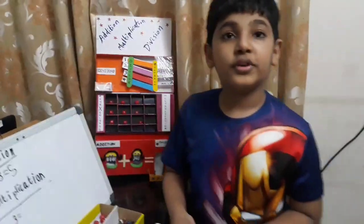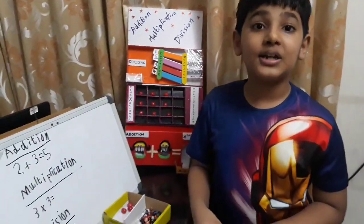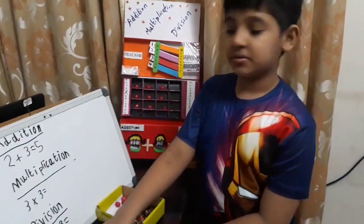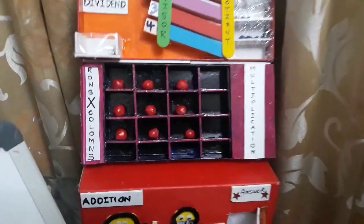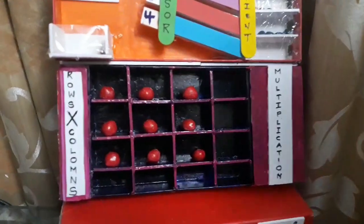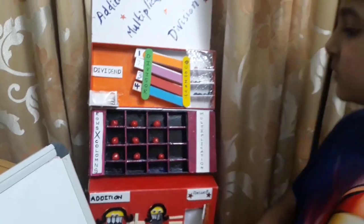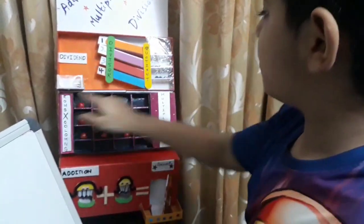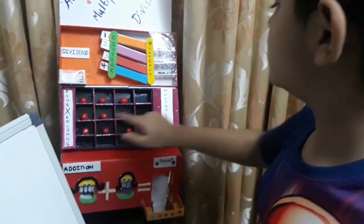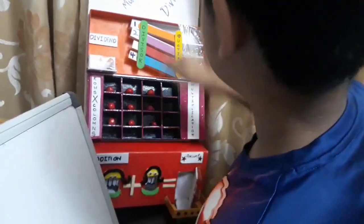Now moving on to multiplication. I am going to use the strategy rows and columns. Let me check how many rows there are: 1, 2 and 3. How many columns are there? 1, 2, 3.